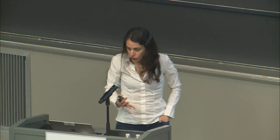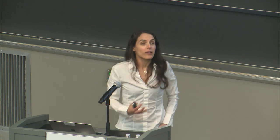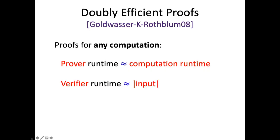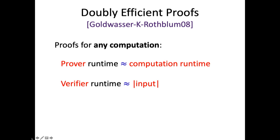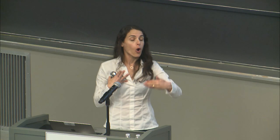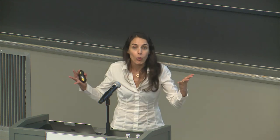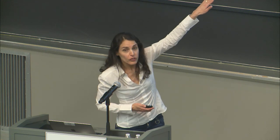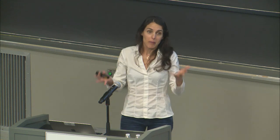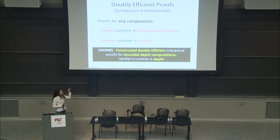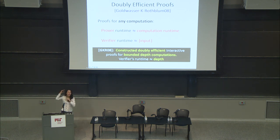This led us to the question of whether there exist what we call doubly efficient proofs. A doubly efficient proof means: yes, we want the verifier to be very, very efficient as before, but we also want the prover's overhead not to be too much. The prover should, essentially, just do the computation. For example, if I want to prove that a program on input x outputs 1 within t steps, then to prove it I need to run in time at least t — maybe poly t — but not more than that, not exponential in t.